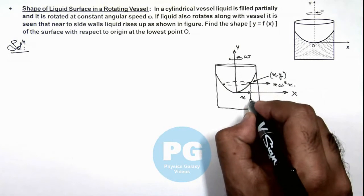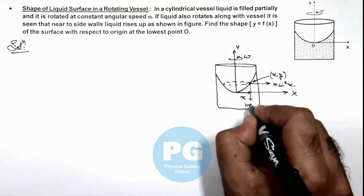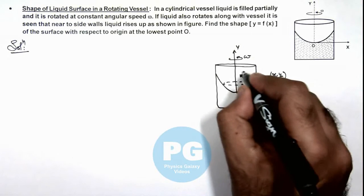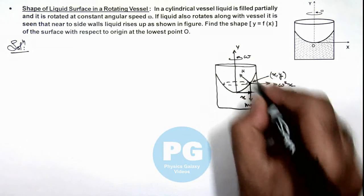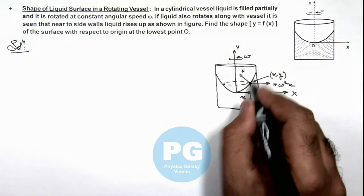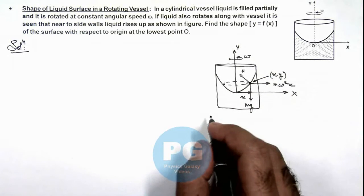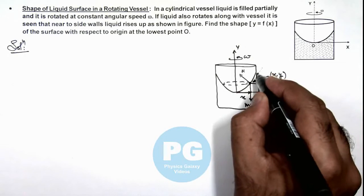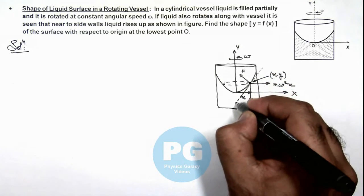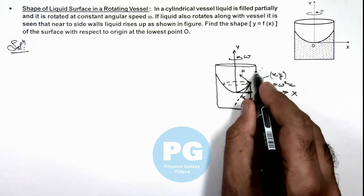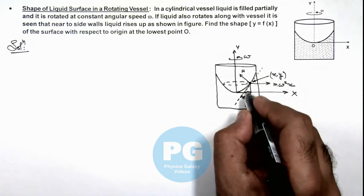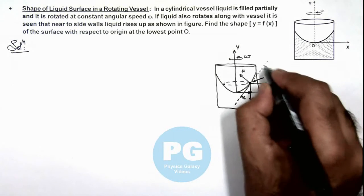And this will experience a downward force mg which is balanced by the normal reaction onto the particle due to the layer of liquid beneath it. Now in this situation, if we draw a tangent at this point along this curve, then we can say the slope of this tangent is theta.